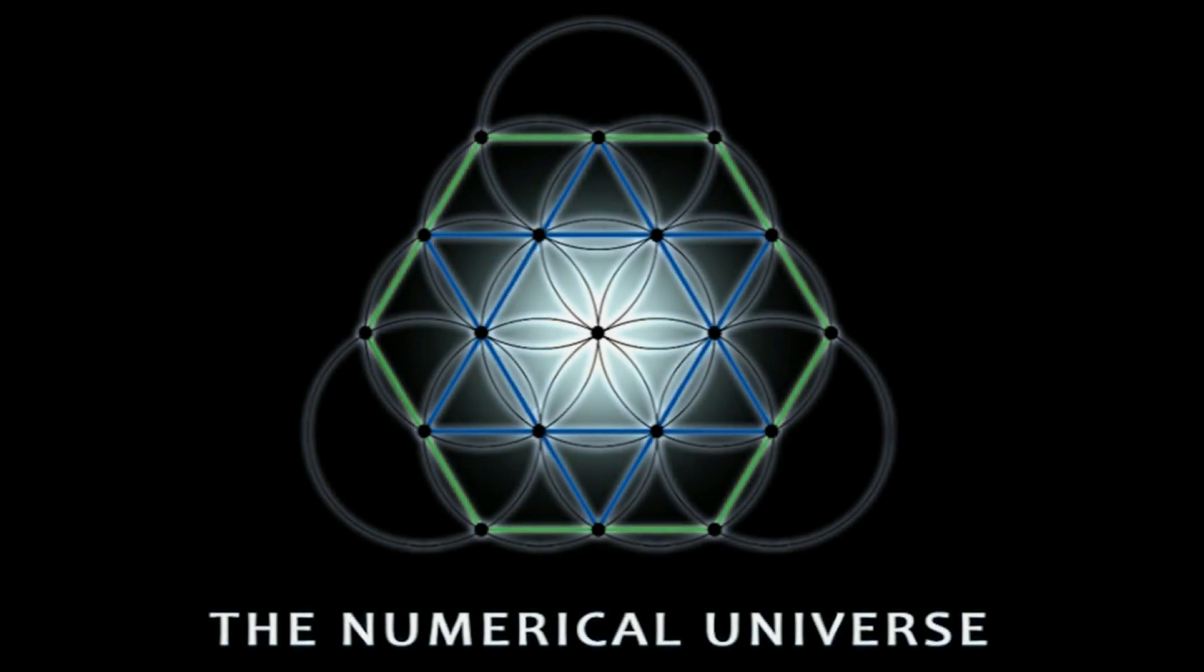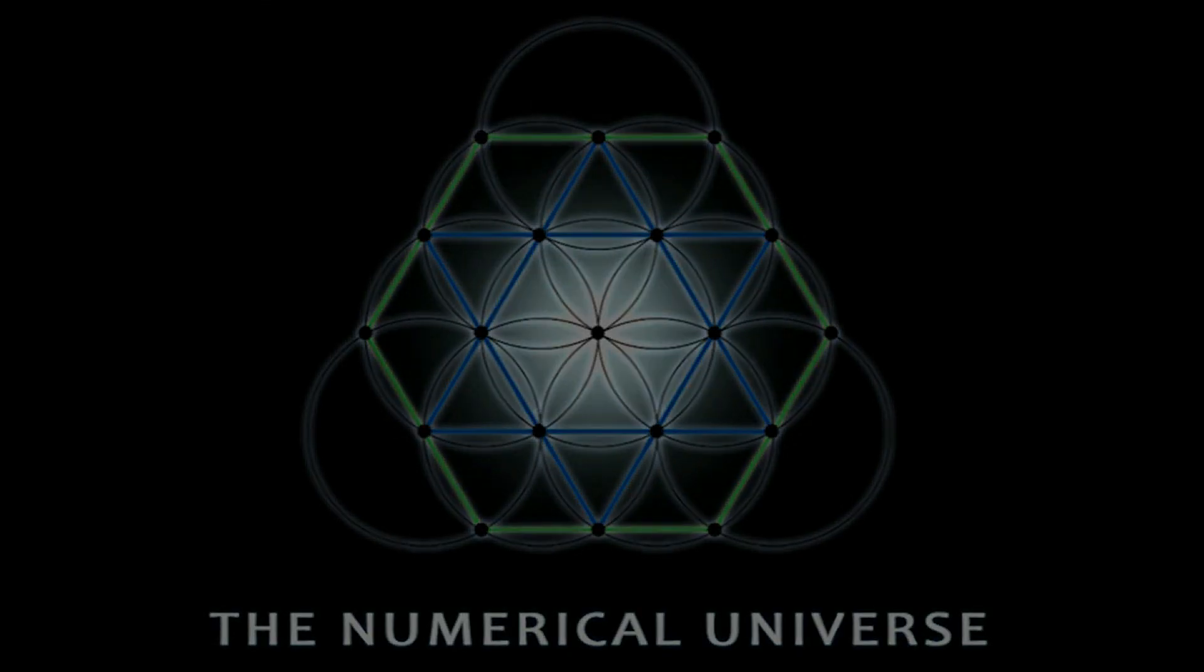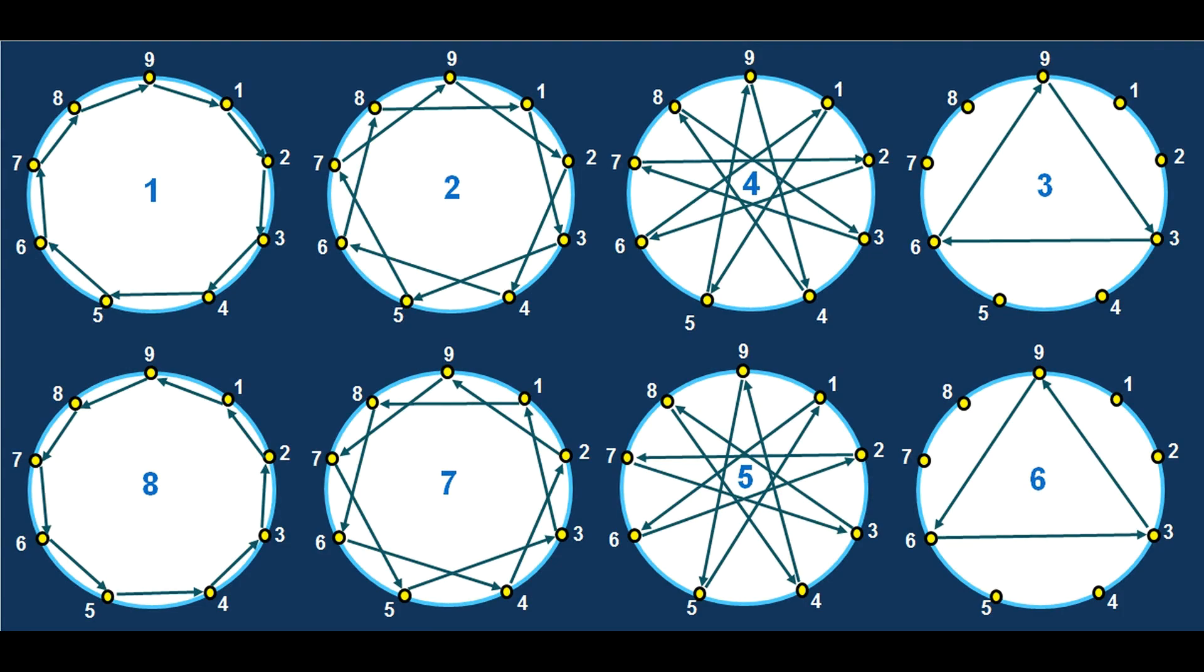Chapter 2, here we see the visual of what is essentially the multiplication tables for each of the numbers, 1 to 8, and looking at their Mod 9 results.